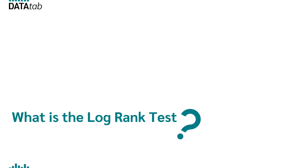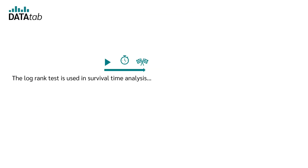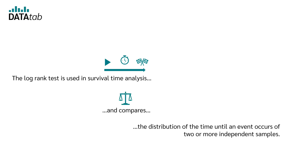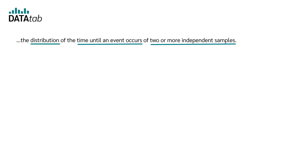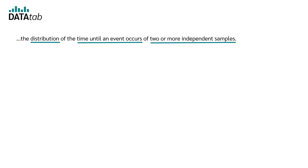What is the log rank test? The log rank test is used in Survival Time Analysis and compares the distribution of time to occurrence of an event of two or more independent samples. What does distribution mean? What does time until an event occurs mean? And what does two or more independent samples mean? Let's start from the back with two or more independent samples.